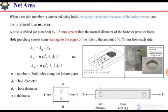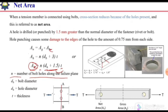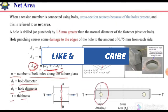If using the AISC code, the standard hole diameter dh is given for each bolt diameter. In that case, the area of holes equals n times (dh + 1.5) times thickness, where 1.5 mm is the allowance for damage. This gives the effective area of the hole. So net area An = Ag minus effective area of holes, where n is the number of bolts along the failure plane, db is bolt diameter, dh is hole diameter, and t is the thickness.